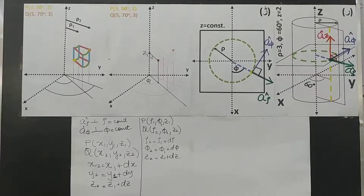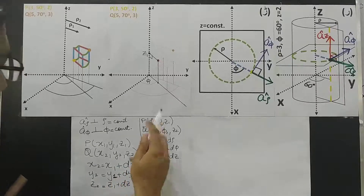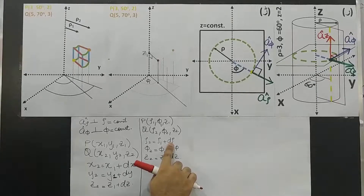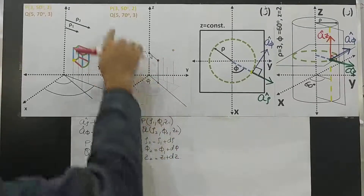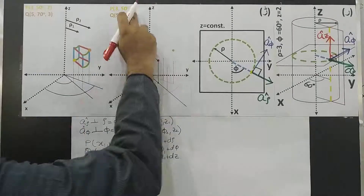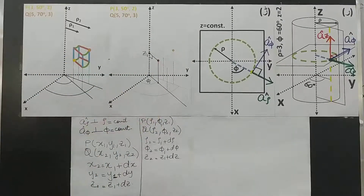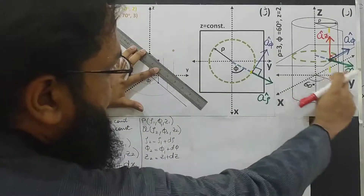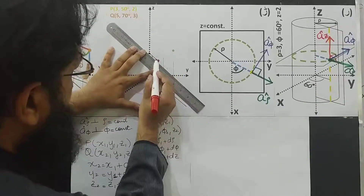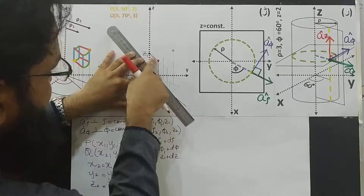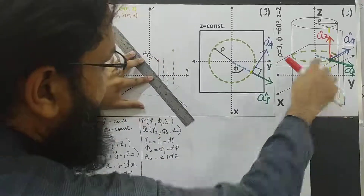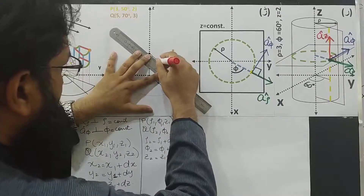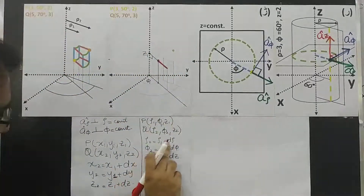Following the same approach as in the Cartesian coordinate system, we move from point P in the direction of a_rho by a certain number of units, which we call d_rho. If I join this point to the Z-axis, this is the radial line on the constant radial plane. Moving in the direction of a_rho by d_rho units, I am now on a larger cylinder — the radius is no longer the same, it should be greater.